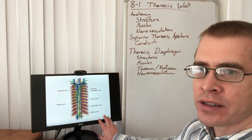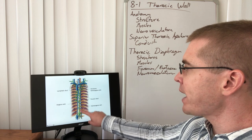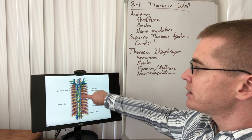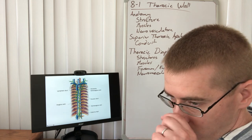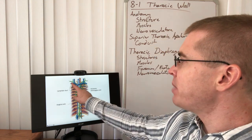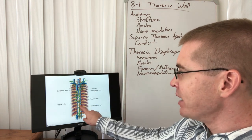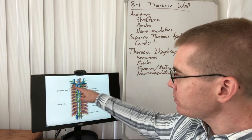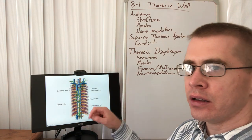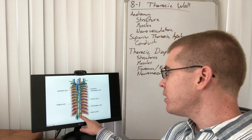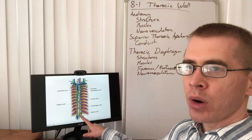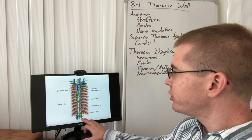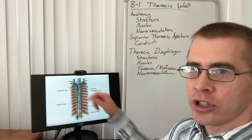The thoracic duct joins in the neck with the subclavian and extends all the way up and down the posterior wall of the thoracic cavity, where it's joined by the lymphatic duct from the right side. Lymph fluid is also draining up from the lower portion of the body, being collected in the cisterna chyli — an enlargement of the thoracic duct — before traveling up to rejoin the vasculature.